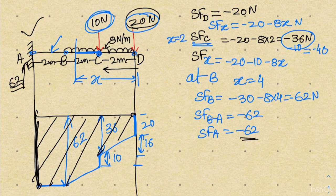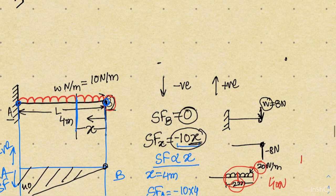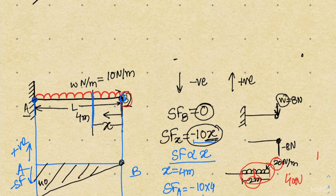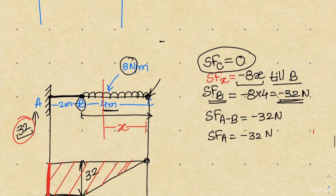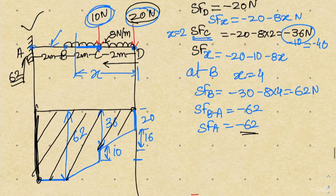This is the complete shear force diagram for the given problem. To summarize the three problems covered: the first had only one uniformly distributed load over the entire beam; the second had a partially distributed load; and the third had a uniformly distributed load combined with point loads. In the next class we will talk about the bending moment of a cantilever beam with a uniformly distributed load. Thank you.